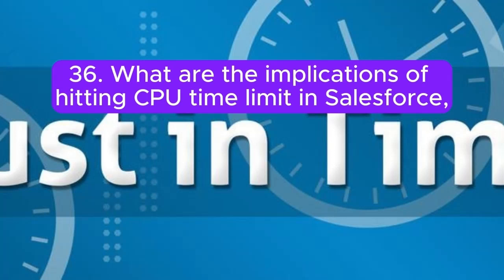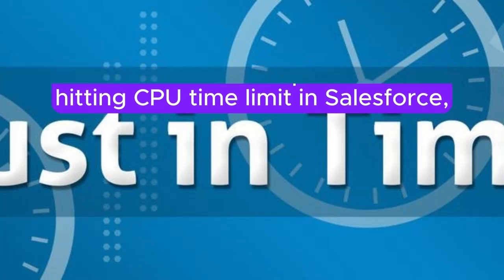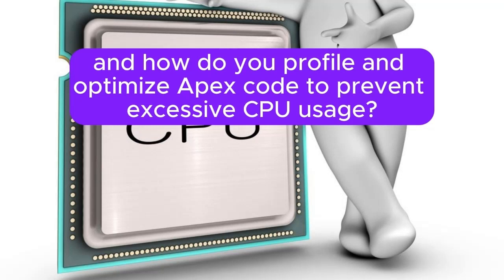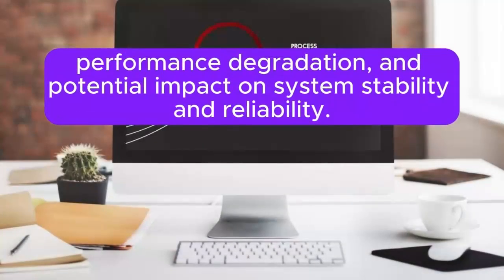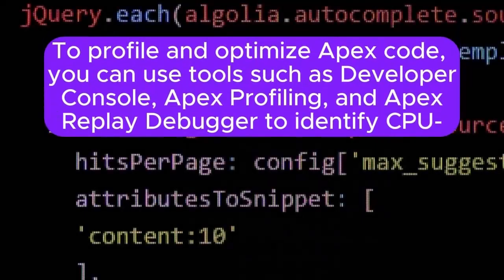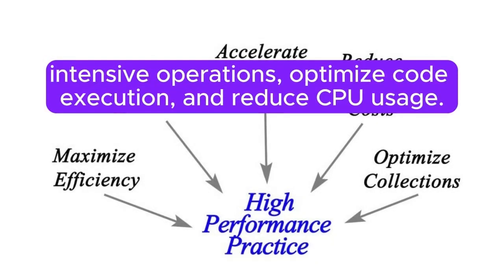Question 36: What are the implications of hitting CPU time limit in Salesforce, and how do you profile and optimize Apex code to prevent excessive CPU usage? Answer: Hitting the CPU time limit in Salesforce can lead to transaction failures, performance degradation, and potential impact on system stability and reliability. To profile and optimize Apex code, you can use tools such as Developer Console, Apex Profiling, and Apex Replay Debugger to identify CPU-intensive operations, optimize code execution, and reduce CPU usage.